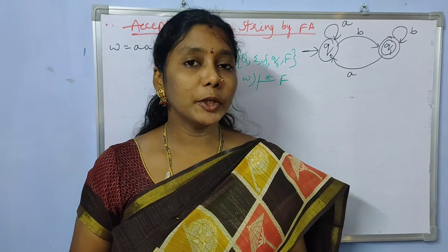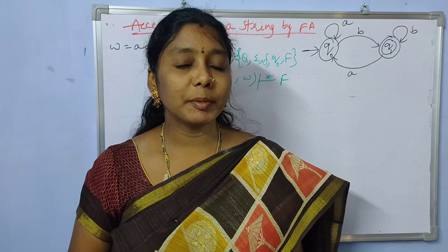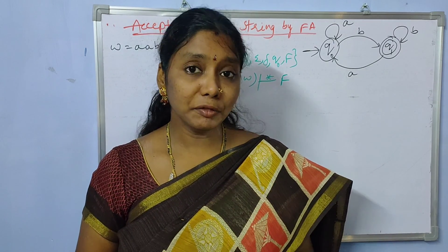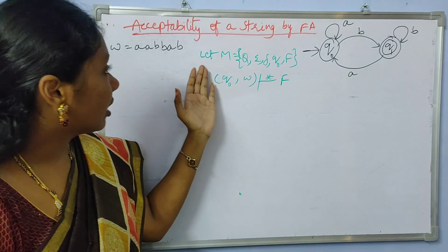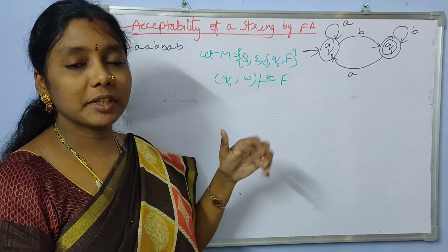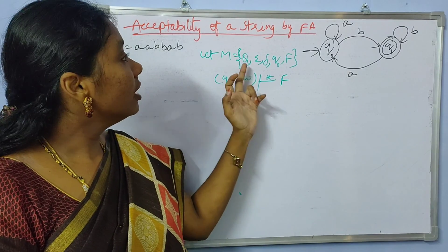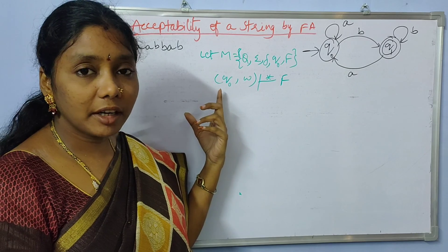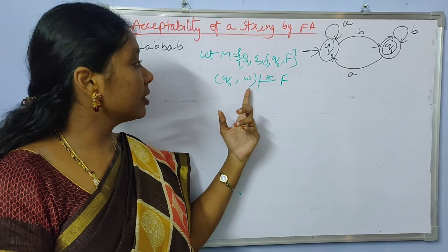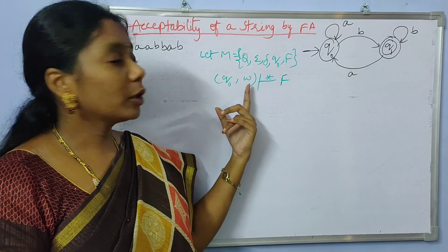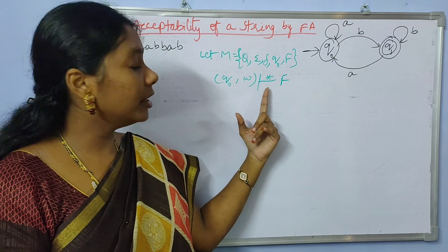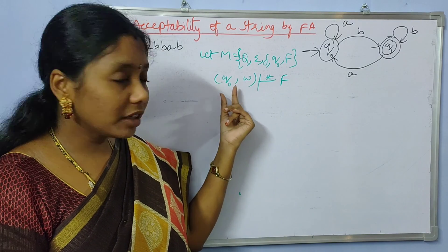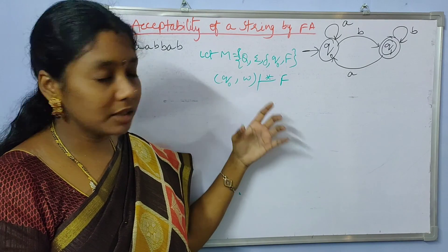Welcome back. In this video I am going to explain the acceptability of finite automata — how a string is accepted in a finite automata. Consider a finite automata M represented with a five-tuple notation: states, inputs, transitions, initial state, and final state. Starting at state q0, after processing the string w through multiple transitions, if you reach the final state, then the string is accepted by the finite automata.